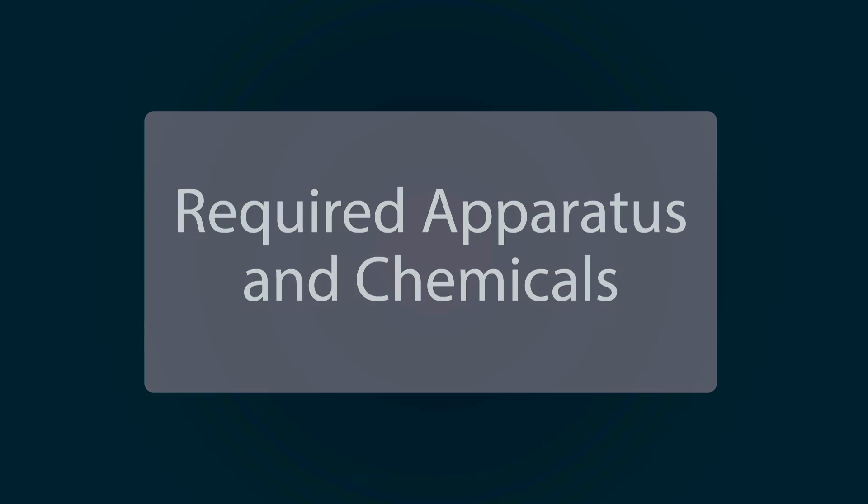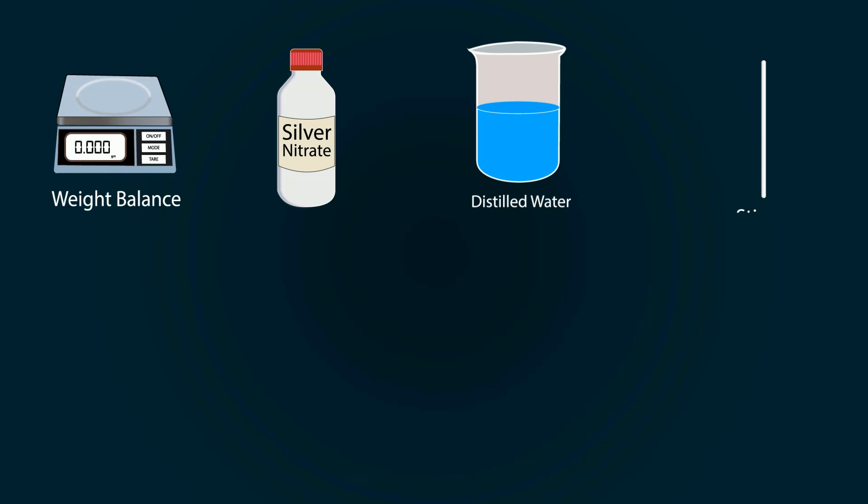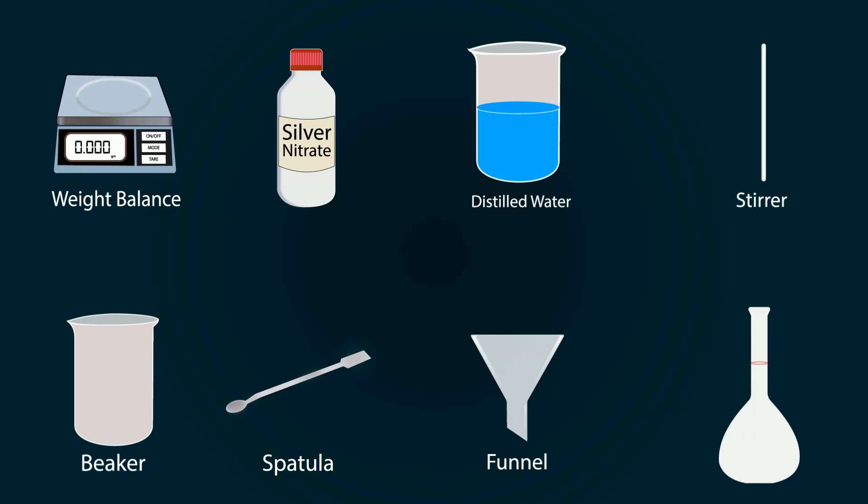The required apparatus and chemicals include weight balance, silver nitrate, distilled water in a beaker, a stirrer, an empty beaker, a spatula, a funnel, and a measuring flask of 1000 ml.